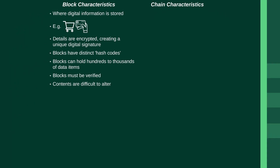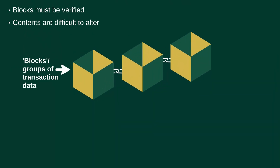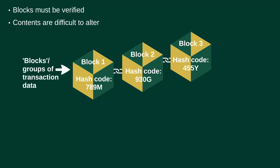Let's look at a diagram representing a blockchain. We've got our blocks — groups of transaction data — block one, block two, block three, and each one has a hash code. We'll come back to this diagram shortly.